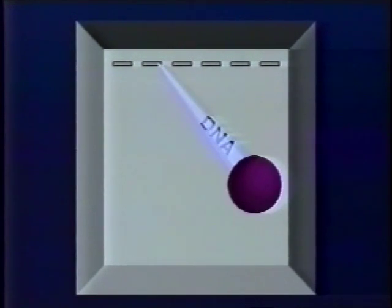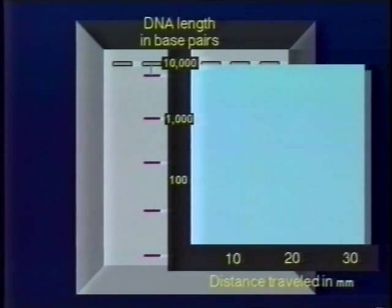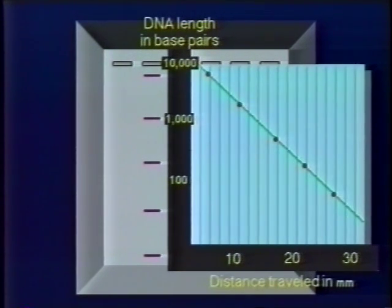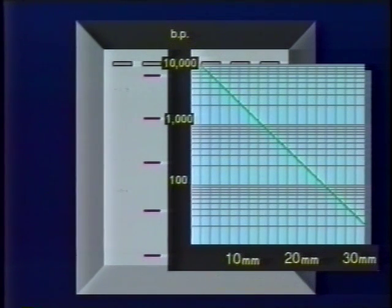Marker DNA allows you to plot a reference curve based on the known lengths of the marker fragments and their distances of migration during the run. Points for the curve are determined by the known base pair lengths of the marker fragments plotted against the distance run in millimeters. To find the length of an unknown DNA fragment, measure the distance run and read its length in base pairs off the reference curve.